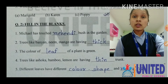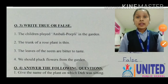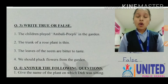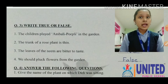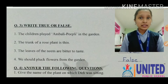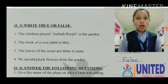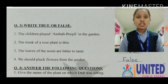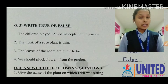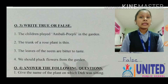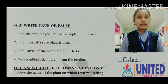Now question number three: true or false. Ma'am asked you these questions in the zoom meeting. Number one: the children played ambly piply in the garden. That is false because they were playing hide and seek in the garden.